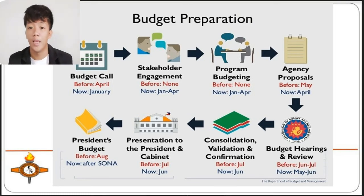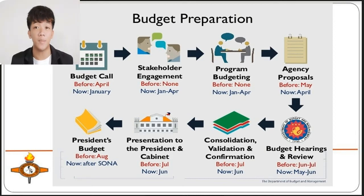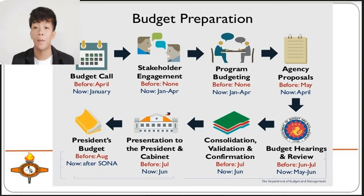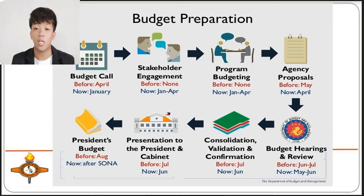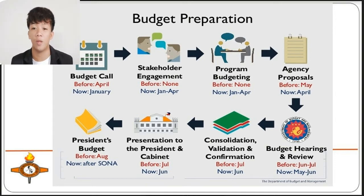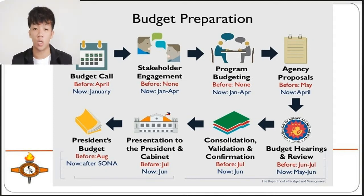The first cycle in the budget cycle is budget preparation, which begins with the budget call. At the beginning of the budget preparation year, the Department of Budget and Management or DBM issues the national budget call to all agencies, including state universities and colleges, and a separate corporate budget call to all GOCCs and GFIs. The budget call contains budget parameters, including macroeconomic and fiscal agency budget ceilings as set by the Development Budget Coordination Committee or DBCC, and policy guidelines for the preparation and submission of agency budget proposals.